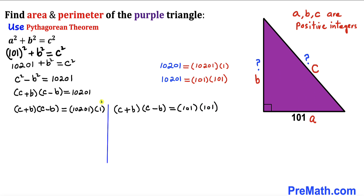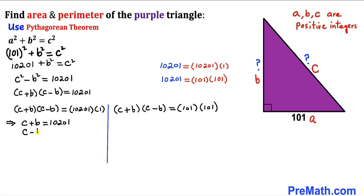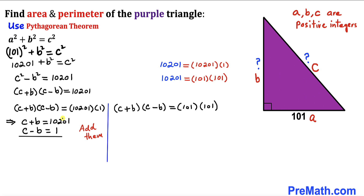Let's focus on the first scenario. Matching the two factors gives us c + b = 10,201 and c − b = 1. Adding these two equations, the b terms cancel, leaving us with 2c = 10,202.